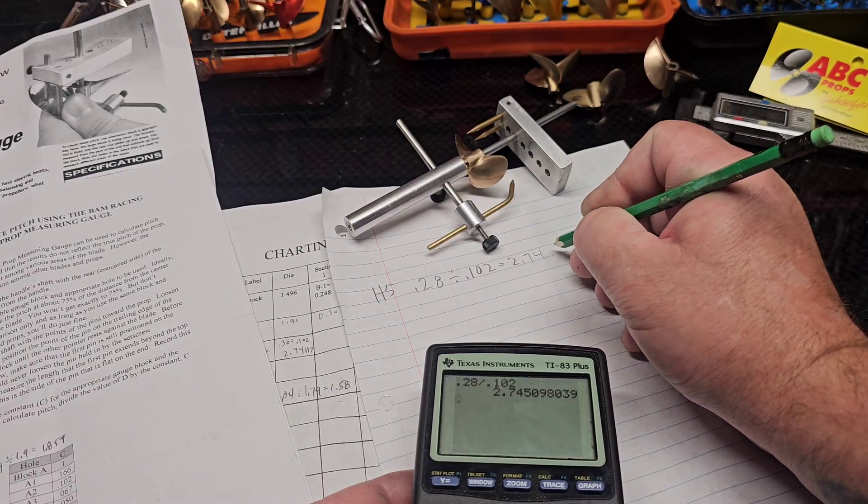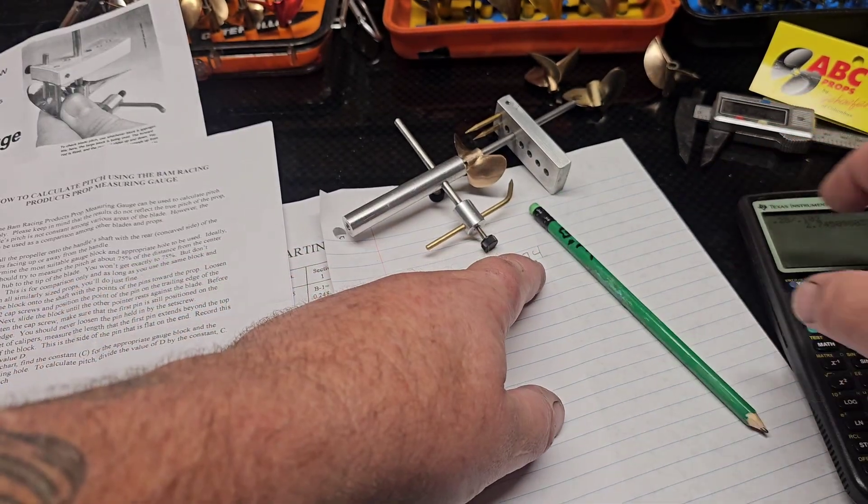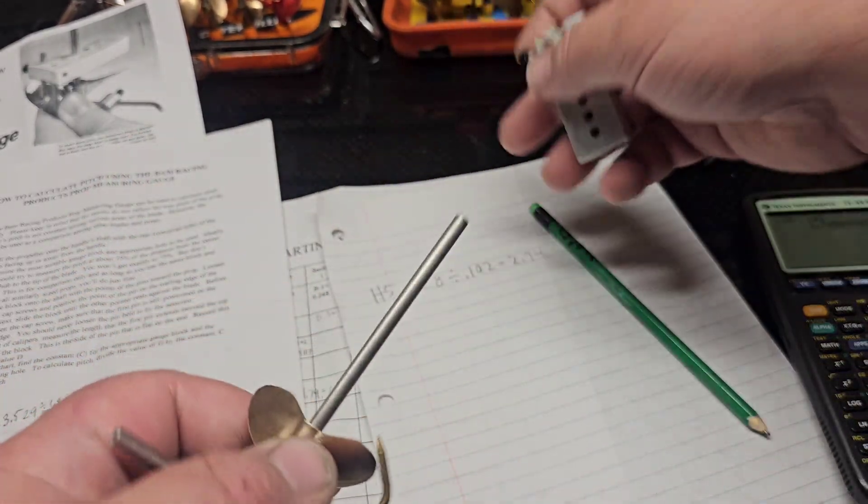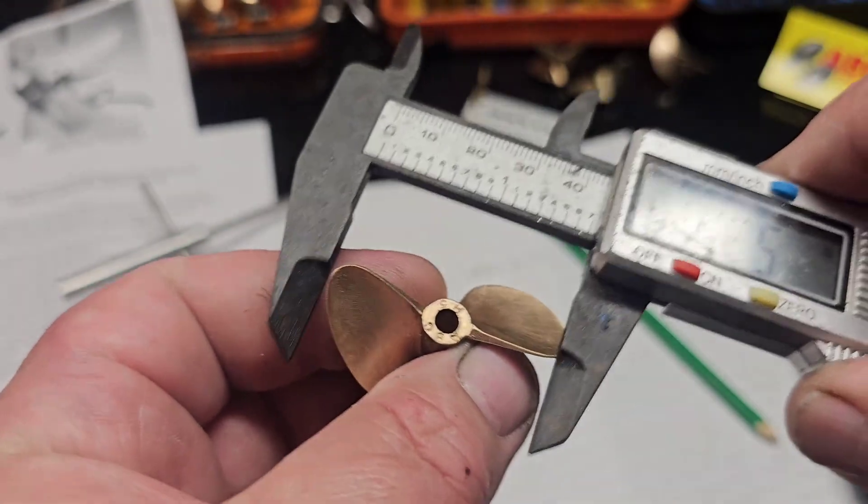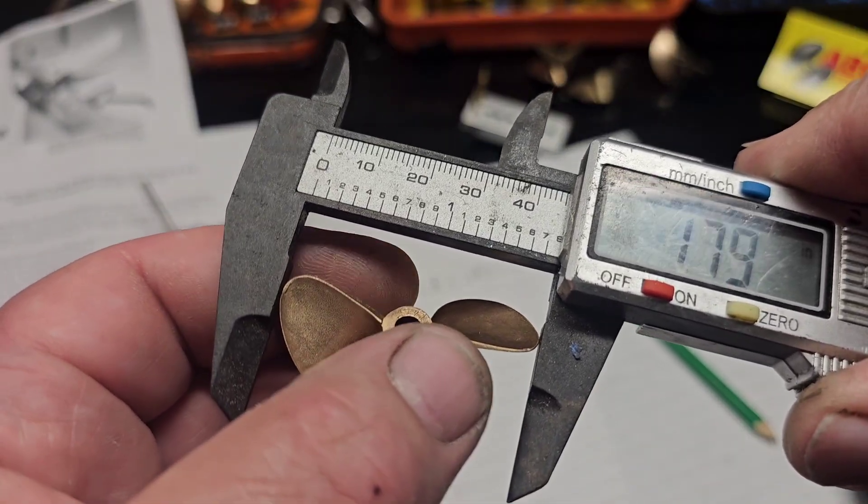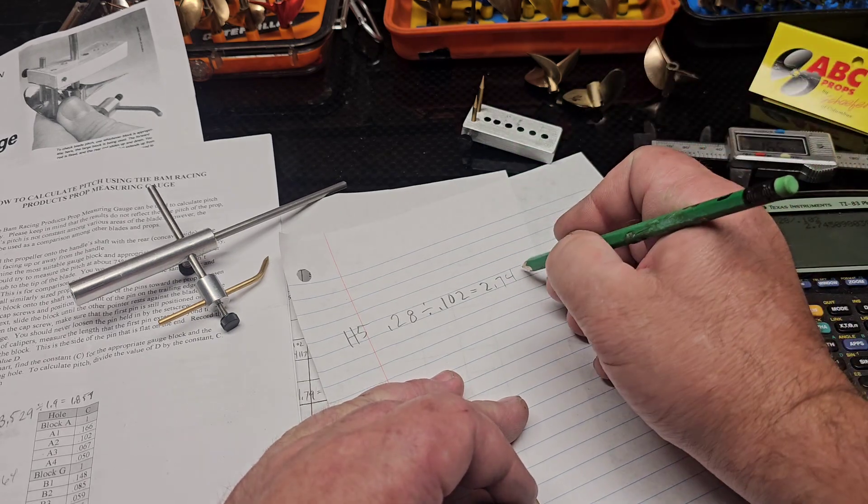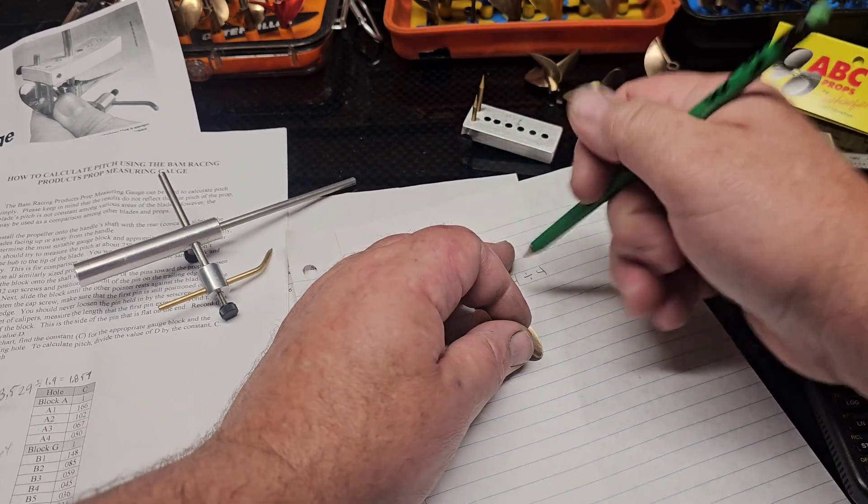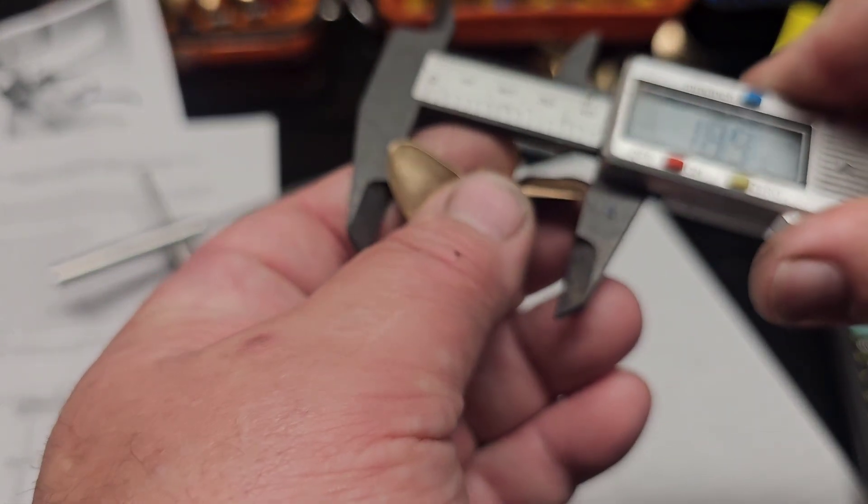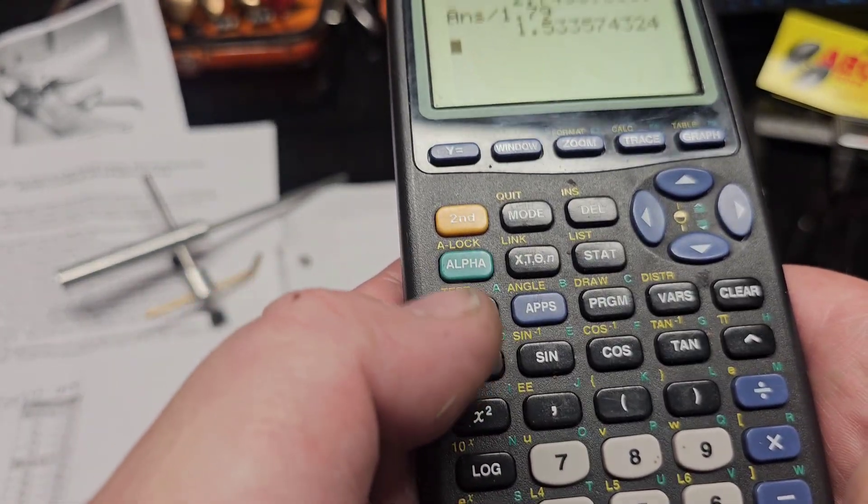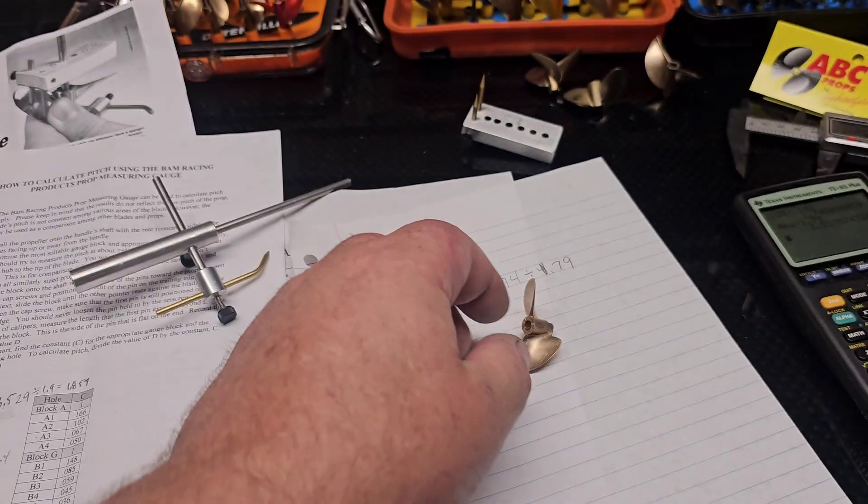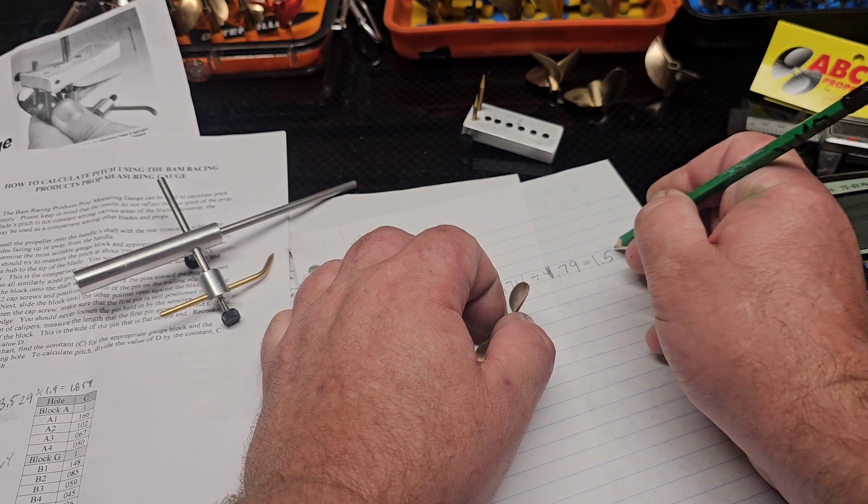So we're going to go 0.28 divided by 0.102 equals 2.74 pitch. 2.74 pitch, and then you actually divide that pitch in inches, basically inches traveled. Divide that number by the diameter of the propeller, which is 1.79.